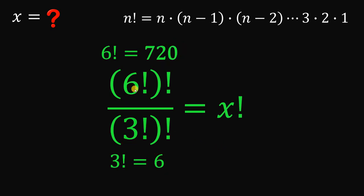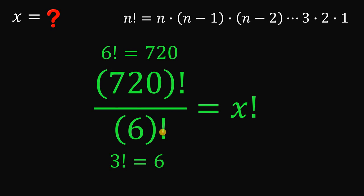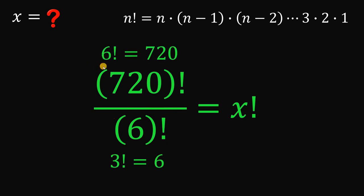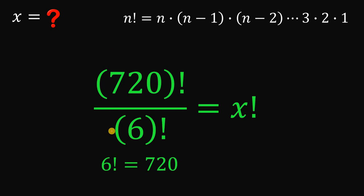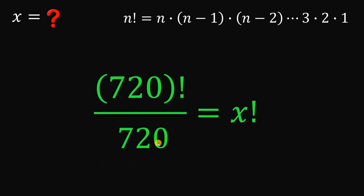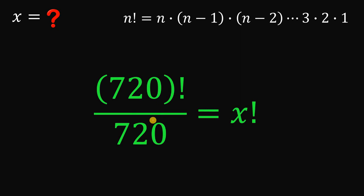So we now have 720 factorial over 6 factorial equals x factorial. Notice that the denominator is 6 factorial, and we already know that 6 factorial equals 720. So the denominator can be replaced by 720, giving us 720 factorial over 720 equals x factorial.